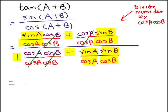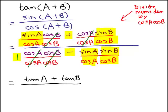Simplifying those, the first term sine A over cosine A is just the tangent of A, and the second term sine B over cosine B is the tangent of B. In the denominator, the first term is 1 minus, and then sine A over cosine A is the tangent of A, and sine B over cosine B is the tangent of B. And that is the formula.